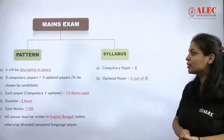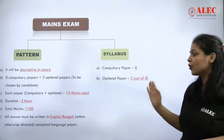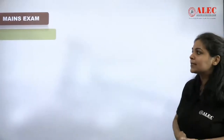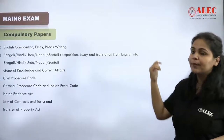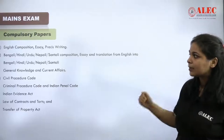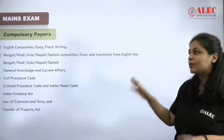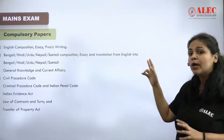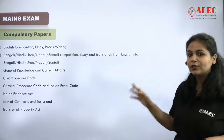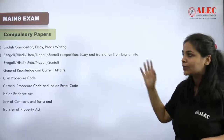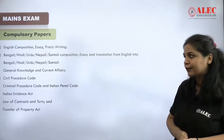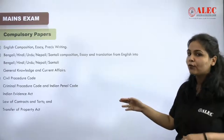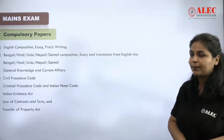The compulsory papers are as follows: Paper 1 — English Composition, including essay and précis writing. Paper 2 — Composition in any of these languages: Bengali, Hindi, Urdu, Nepali, or Santali, including essay writing and translation to and from English. Then there is a paper on General Knowledge and Current Affairs, one on CPC, one on CRPC along with the Indian Penal Code, one on the Indian Evidence Act, one on Law of Contract along with Torts, and one on Transfer of Property Act.